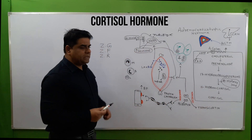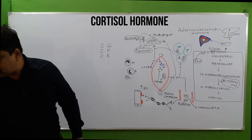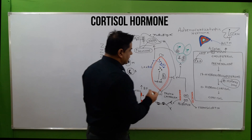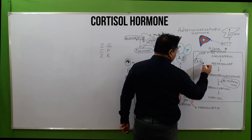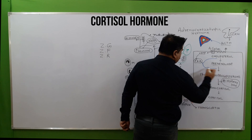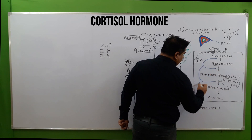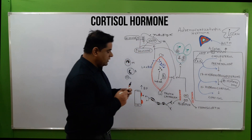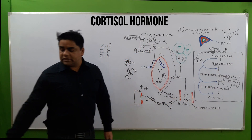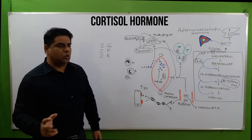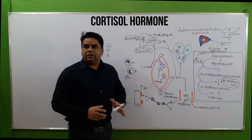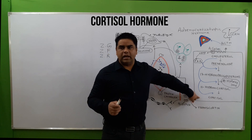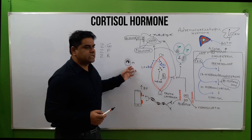The 11-hydroxycortisol is further converted into cortisol. Protein kinase A phosphorylates and influences many enzymatic activities, especially 21-hydroxylase, to enhance the production of cortisol. This is how cortisol is prepared in the zona fasciculata cells of the adrenal gland.